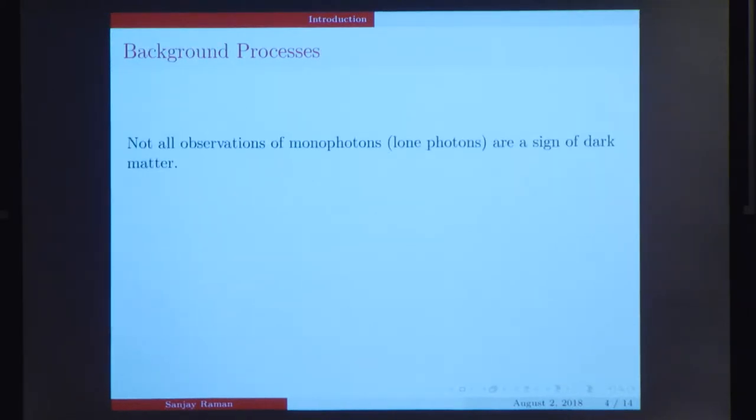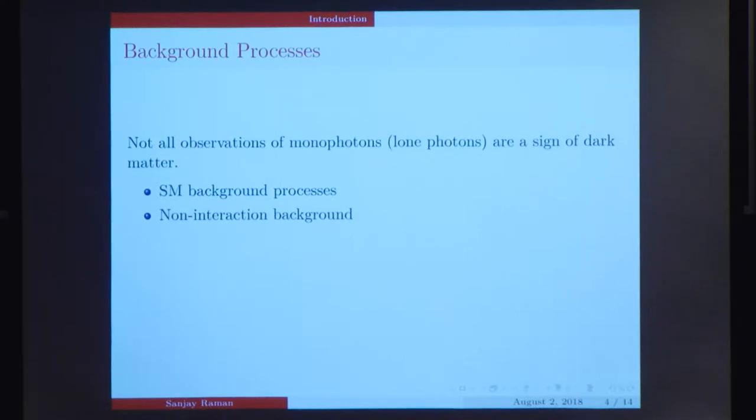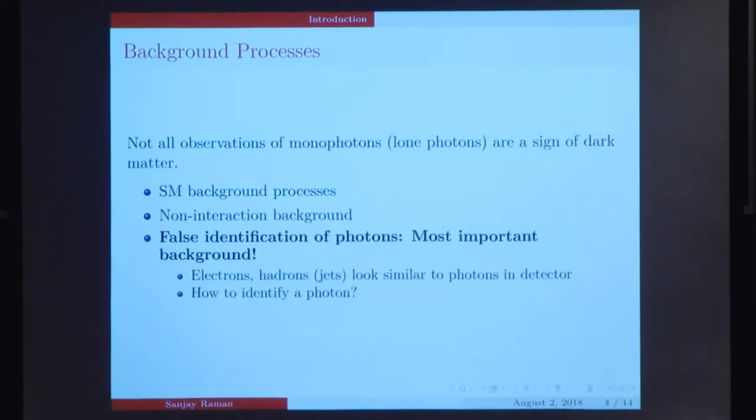However, not every monophoton signature is dark matter. There are several standard model background processes. Many decays that occur entirely within the standard model result in the same final state of a single photon. For instance, we could have a Z boson decaying into two neutrinos and a photon. Since we can't observe the neutrinos, we would also observe only a photon, but it's entirely standard model, no dark matter. We could also have non-interaction background where a single photon could be emitted without even a collision having occurred. Finally, the most important background that we're concerned with is actually the false identification of photons. Electrons and hadrons, or jets, look very similar to photons in a detector.